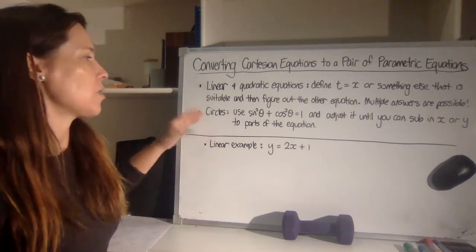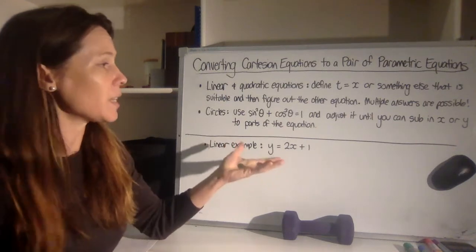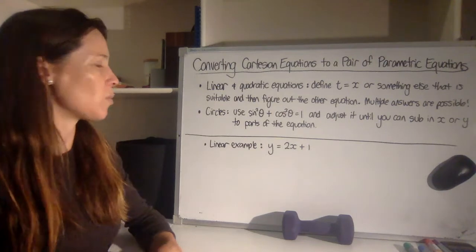With circles, again you just want to use this sine squared theta plus cos squared theta equals 1 and then adjust it until it looks a lot like the equation that you want and you can actually just sub x or y in.